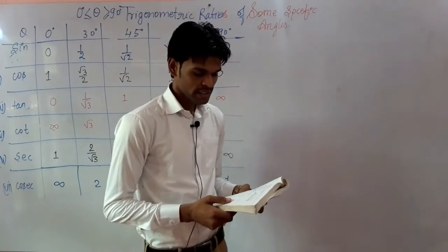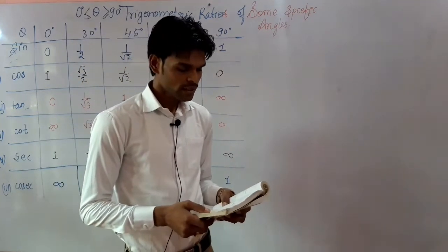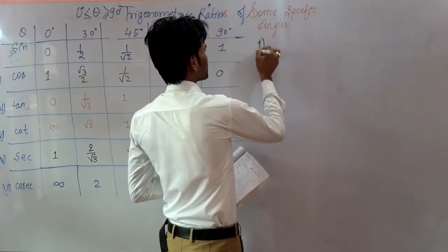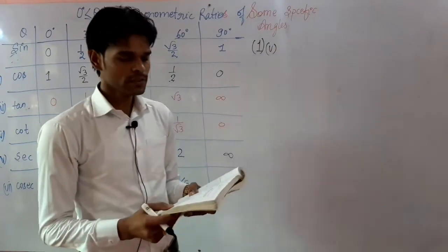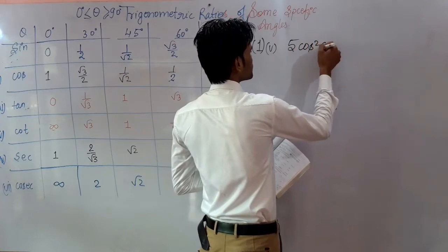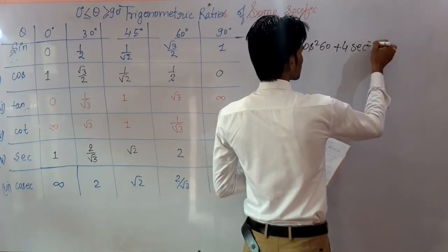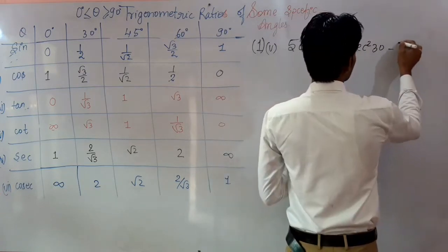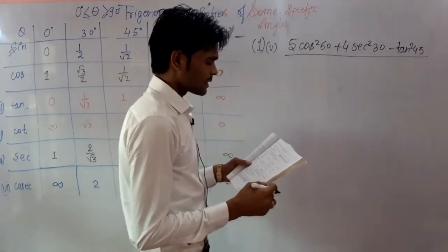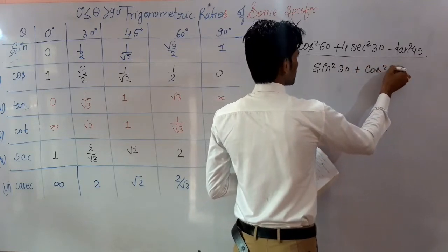The fifth part of this question says: 5cos²60 plus 4sec²30 minus tan²45, upon sin²30 plus cos²30. I hope you all have learned the values.